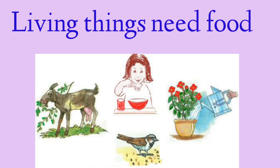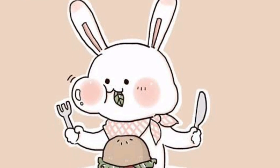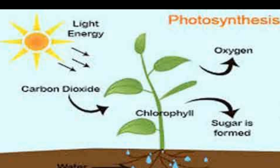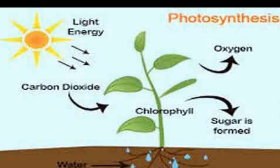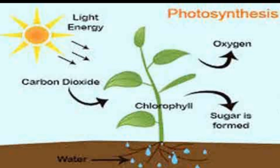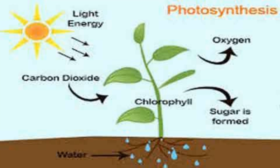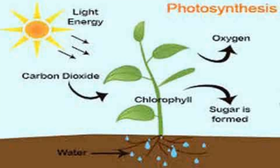The second criteria of leaving things is that leaving things need food. All living organisms require food and water in sufficient quantity to get energy, to perform various activities, and for their growth and development. Now different organisms use different ways to get their food. A green plant can make its food by the process of photosynthesis, with the help of carbon dioxide from the air, water and minerals from the soil, chlorophyll present in their leaves, and with the help of sunlight.